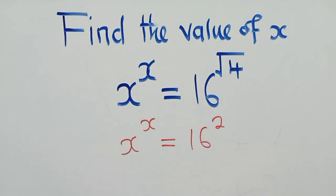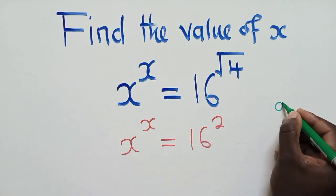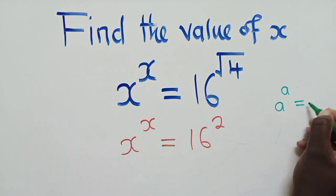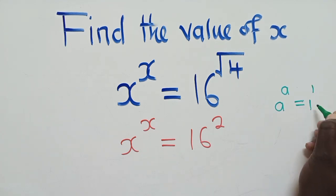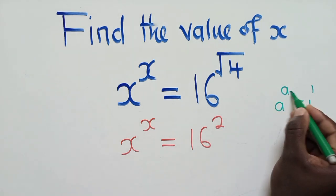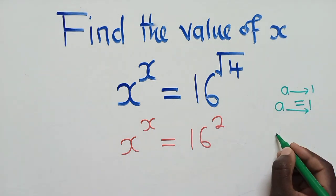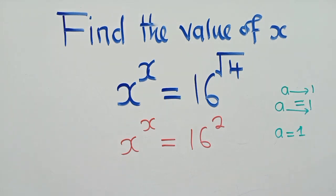Now, using the idea of laws of indices, we know that if you have a power a equal to, let's say, 1 power 1 here, meaning this a will move with 1 here and this a also will move with 1. This simply means a is equal to 1.